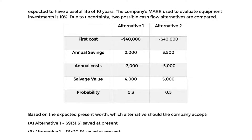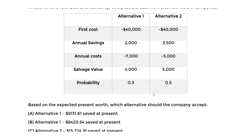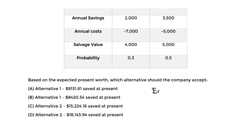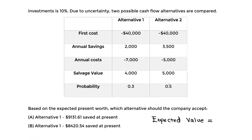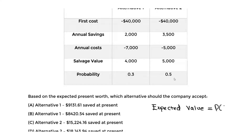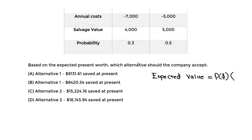The basic definition we need: expected value equals probability times the event. In this case, it's the probability given for each alternative times the cash flow — whether that's the first cost, annual saving, annual cost, or salvage value for alternative one.